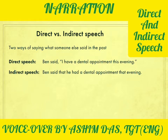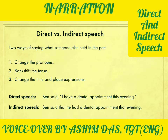Those are the two basic differences. Now let's talk about how to convert a sentence from direct to indirect speech. There are three steps: number one, change the pronouns; number two, backshift the tense; and number three, change the time and place expressions. In the example, the pronoun 'I' in direct speech has become 'he' — referring to Ben. This is the first step.